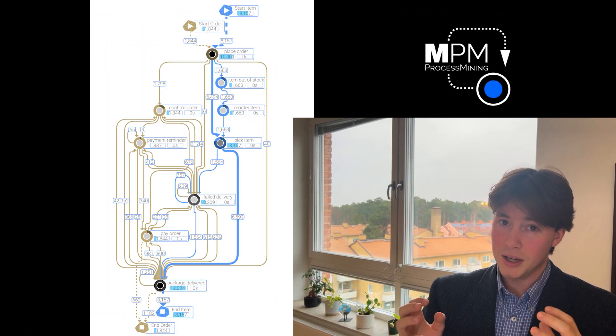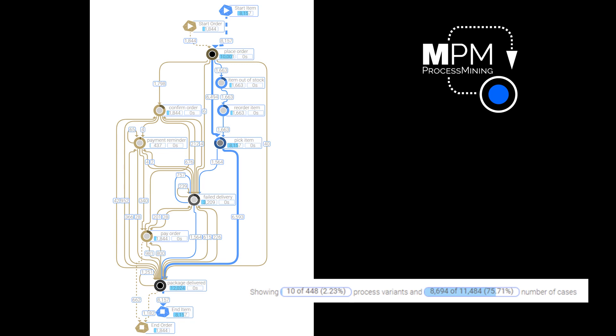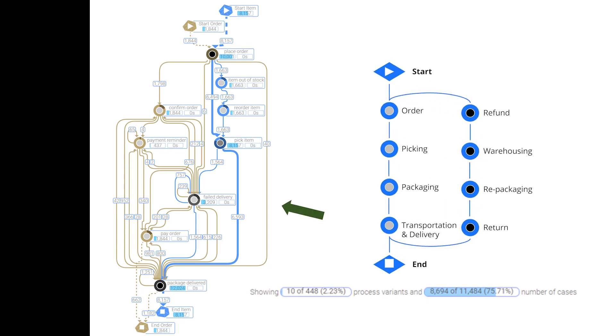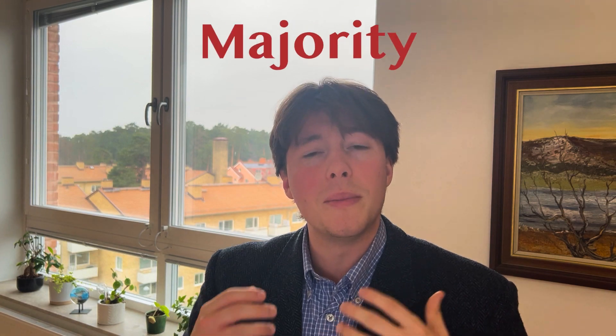This following picture shows a real example of the top ten process variants that occur in a similar process. We can see there are quite a lot more actual events in NPM compared to my example. The top ten process variants account for more than 75% of the total number of cases, so a small number of process variants stands for the majority of the events.